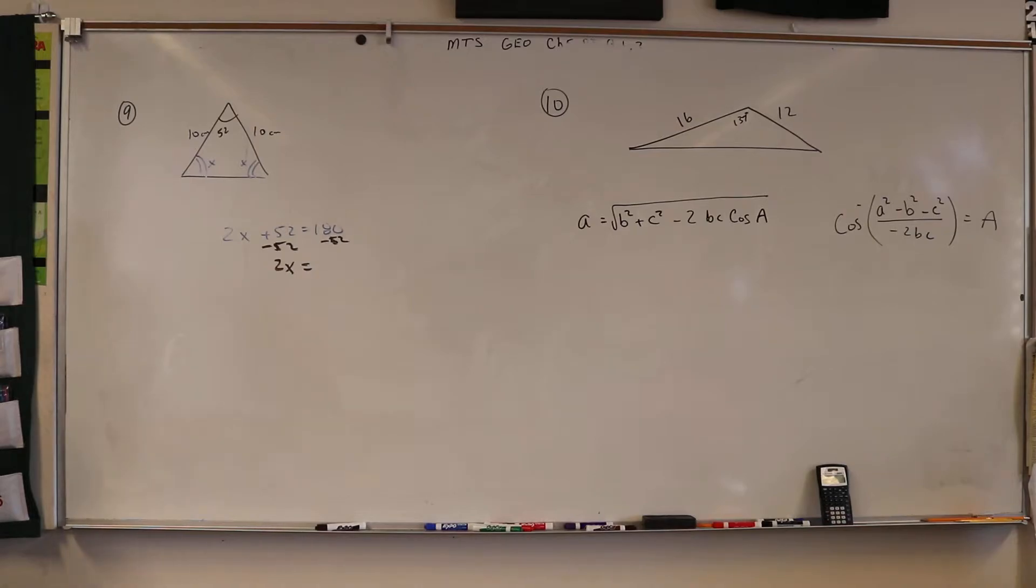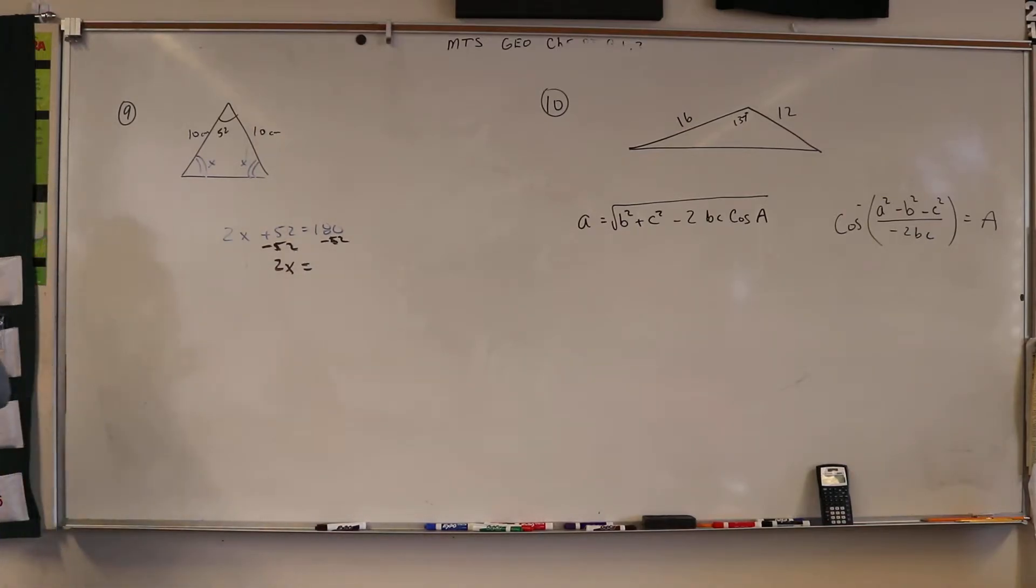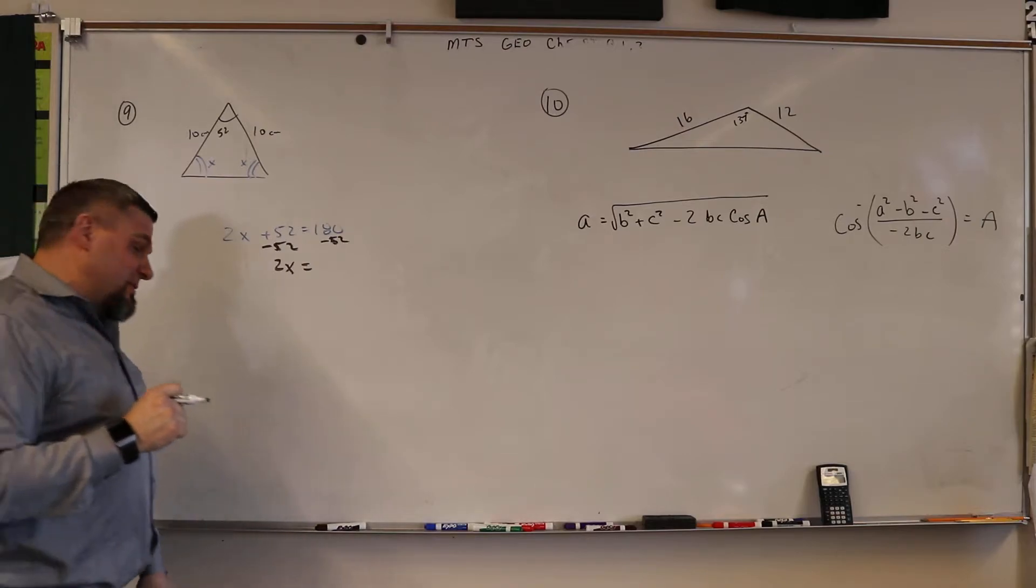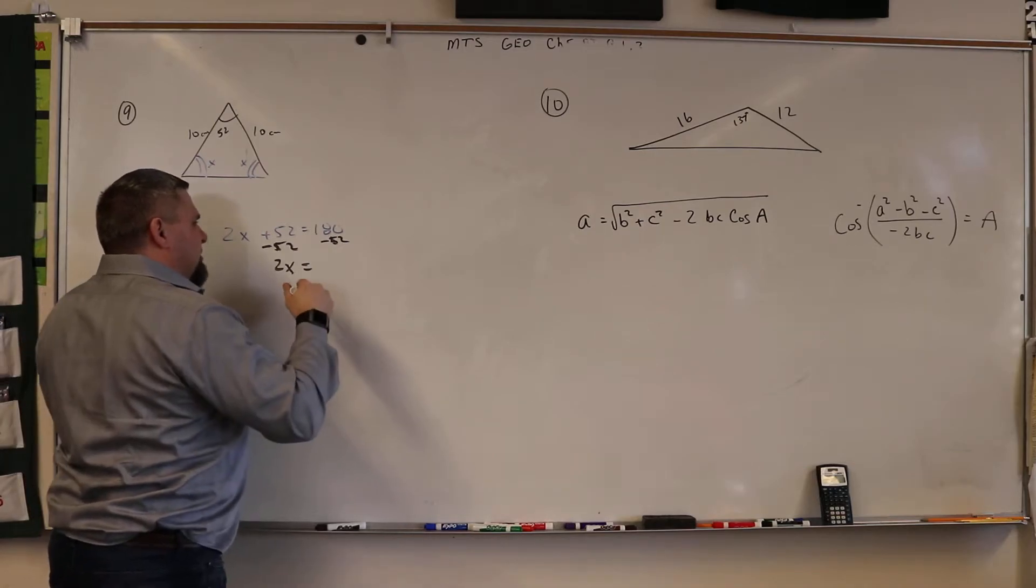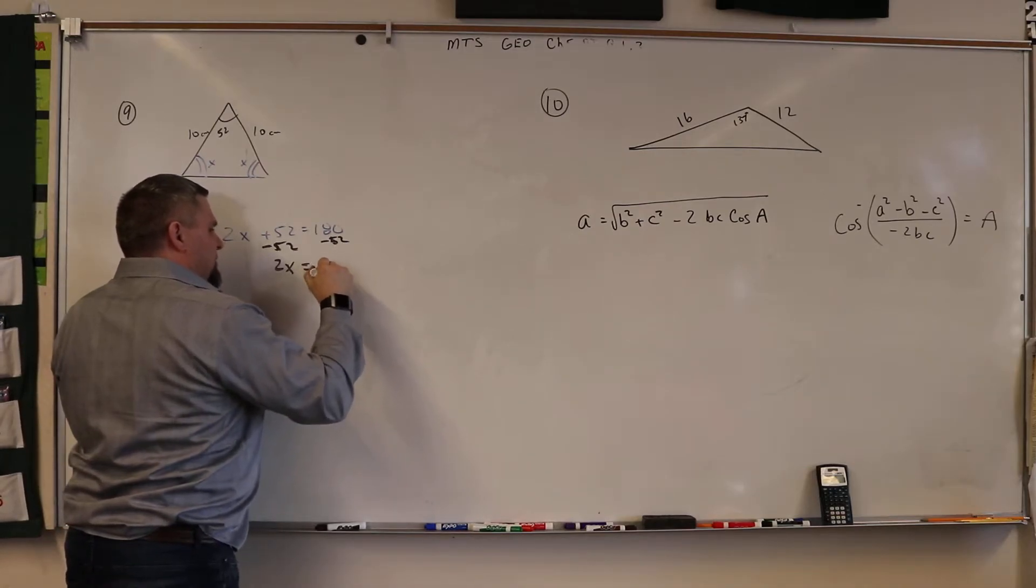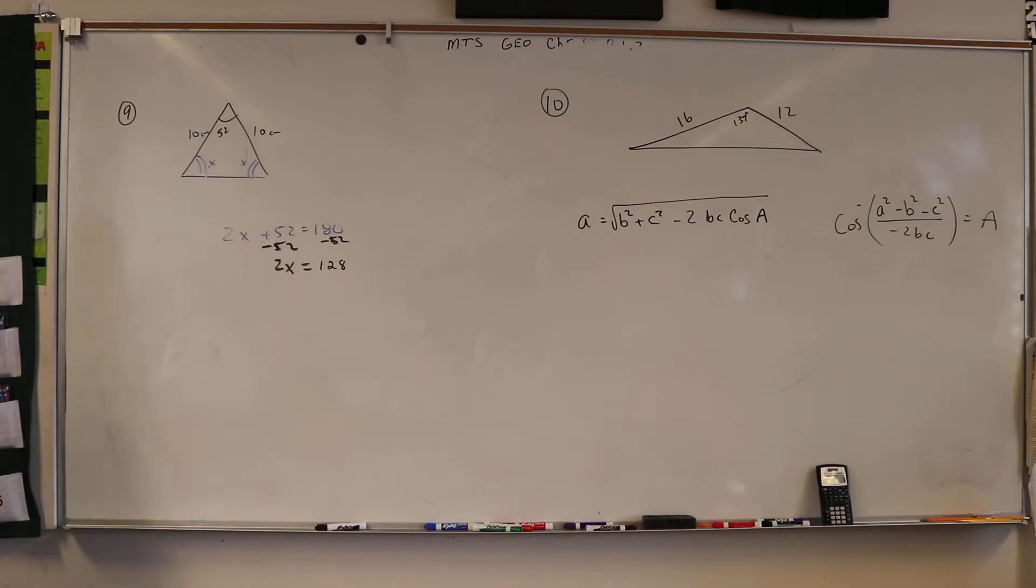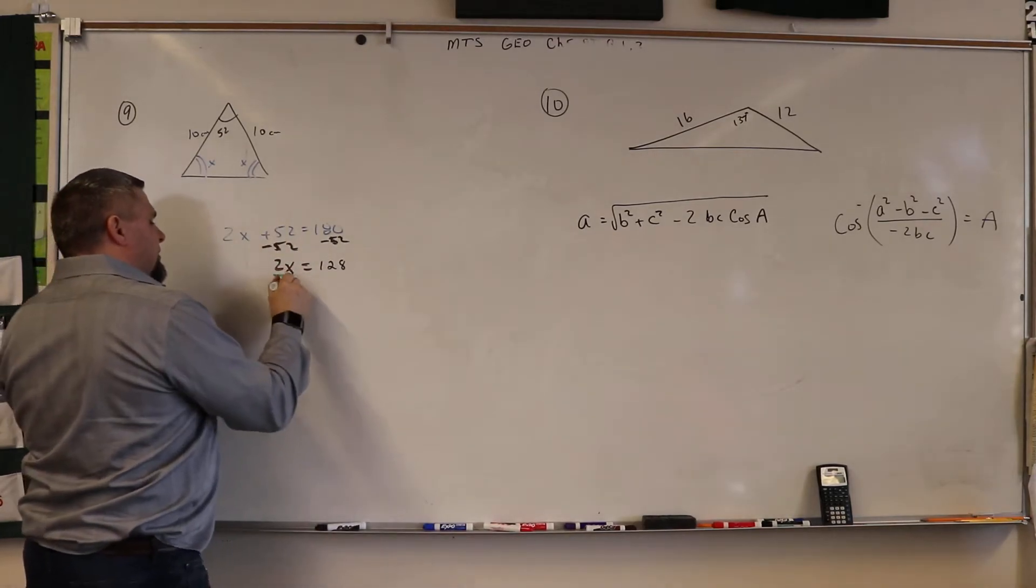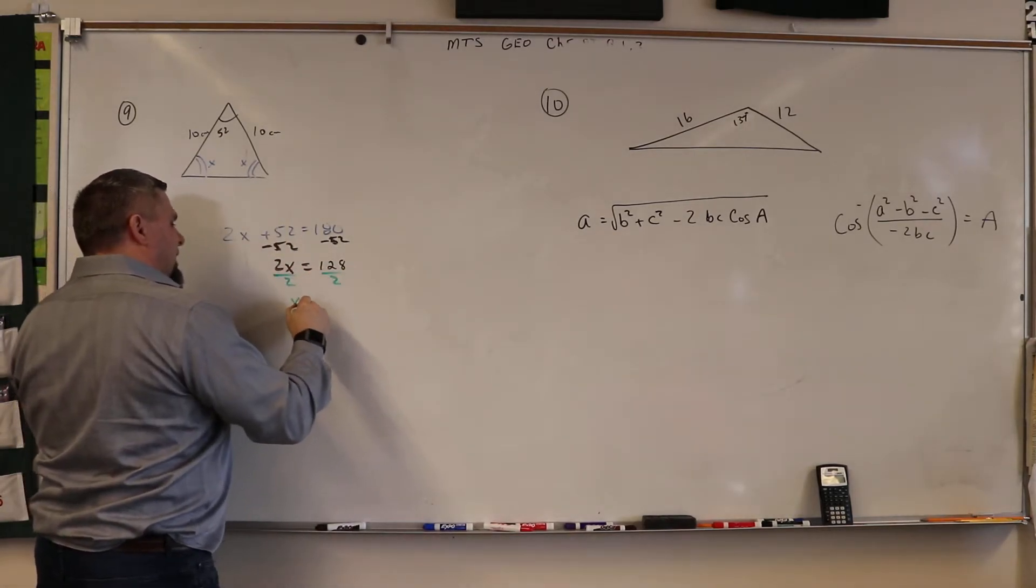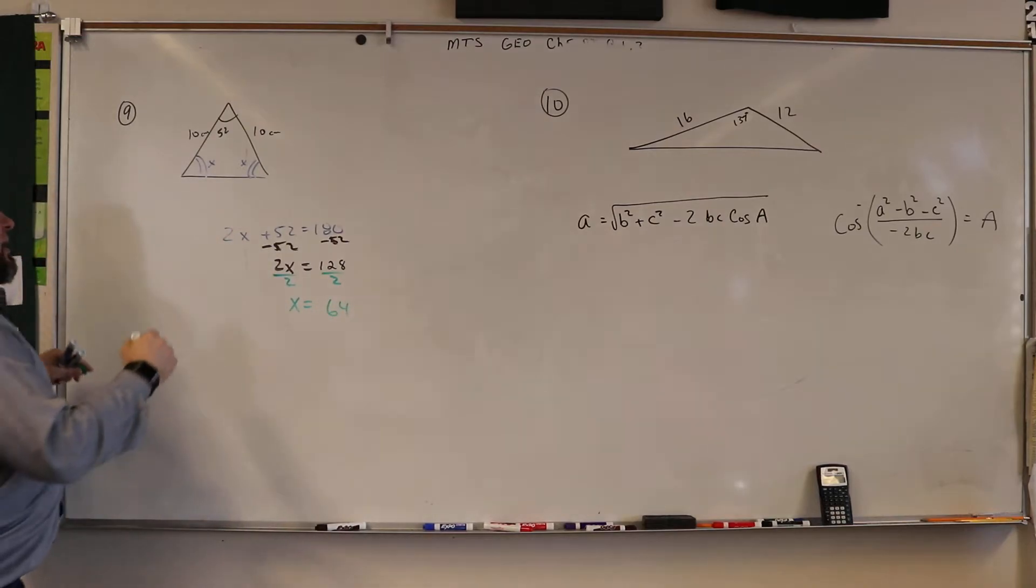180 minus 2 is 28, so that'd be 128. Then we would divide that by 2, we get x is 64. So that means we got 64 and 64.